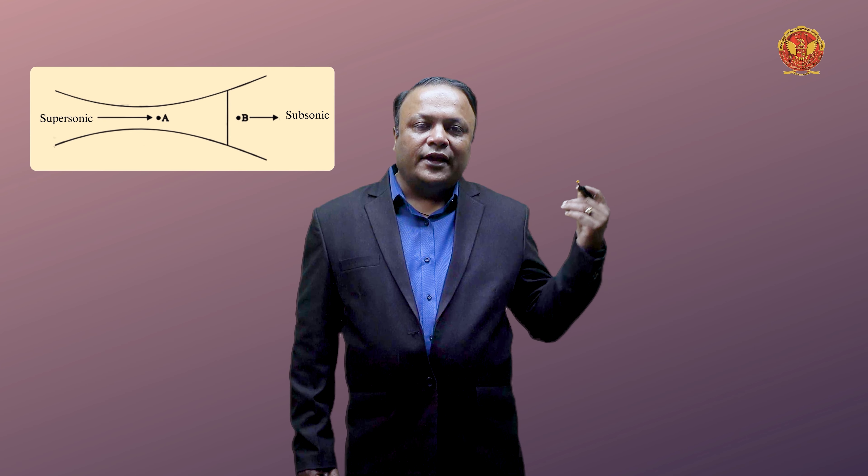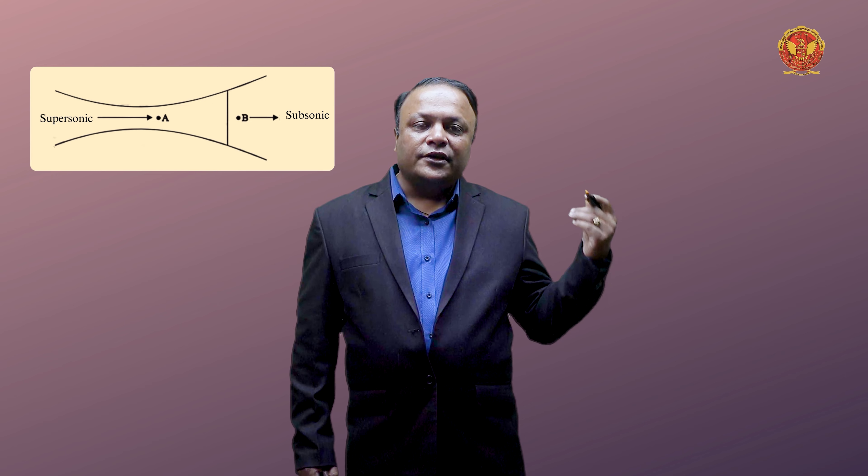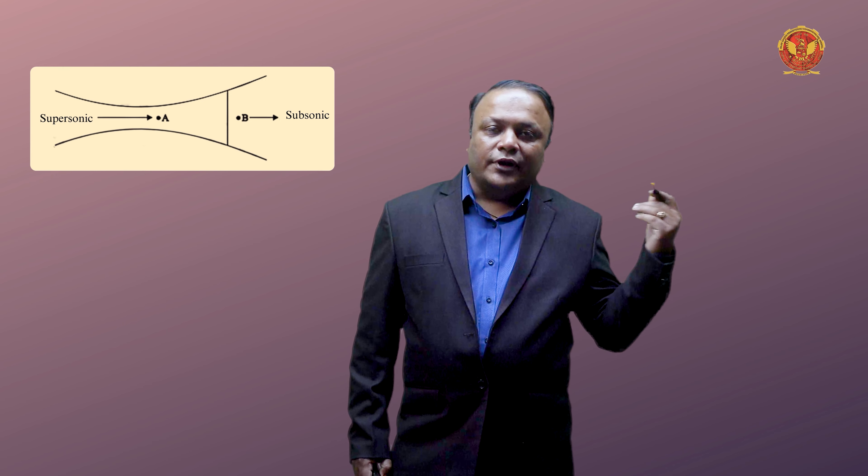To yahan pe jaisa ki hum diagram mein dekh pa rahe hain, left to right yadi fluid move ho raha hai, to supersonic se subsonic ki taraf fluid flow ho raha hai. To jaisa ki mean free path ki distance rehti hai, ki fluid jo hai supersonic se subsonic condition pe ho raha hai, to wahan pe velocity decrease hoti hai, aur suddenly pressure rise hota hai. To yadi pressure rise ho raha hai, velocity decrease ho rahi hai, to us case mein normal shock hona zahir si baat hai.